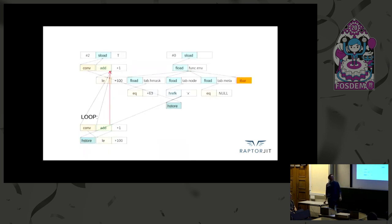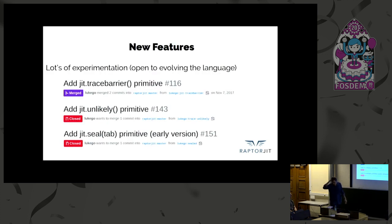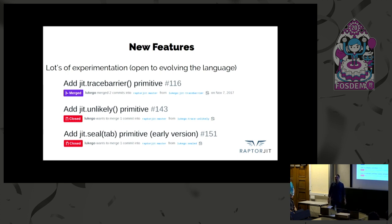The tool we wrote is a very visual tool. This is a dependency graph of the intermediate representation instructions, where you can see the loop body and the head that's executed before entering the loop. We've experimented with a trace barrier primitive that stops traces from going over a line of code and forces a new trace to be created. We like that one. We also experimented with a JIT unlikely primitive — we didn't like that one. And there's a JIT seal primitive that would let you declare or constify a table at runtime, giving the compiler a superpower to treat tables created after configuration as constant and optimize based on their contents.